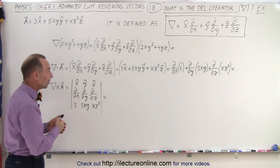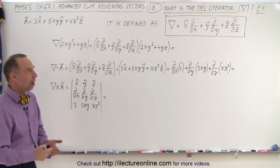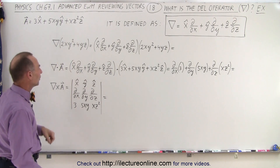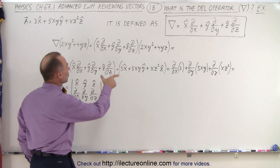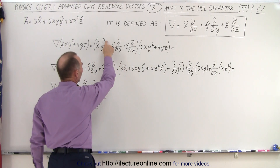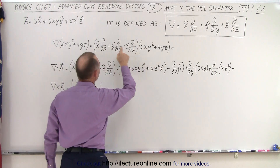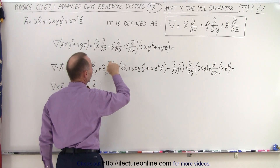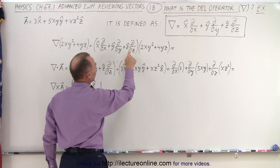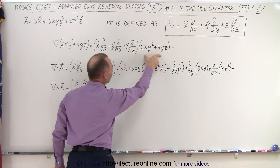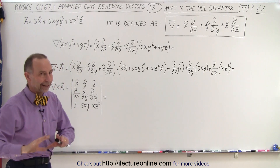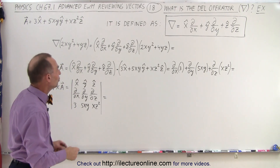Here we have the examples that will show how to go through the mechanics of using the DEL operator. First, we're going to use the DEL operator on a scalar function. That means we're going to multiply the DEL operator times the scalar function — taking the partial derivative with respect to x, y, and z, each multiplied by the corresponding unit vector. We'll end up with a vector quantity called the gradient.